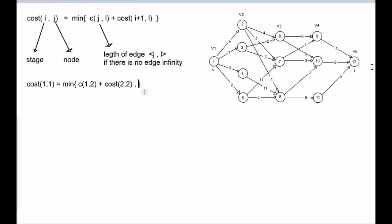Similarly, for remaining paths: 1,3; 1,4; and 1,5. C(1,3) plus cost(2,3), that is from 3 to 12 path cost.